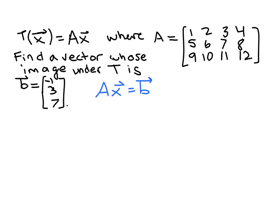So we're asked really to solve this matrix equation of the same type that we've been solving since the beginning of this course. And so we can do that by setting up an augmented matrix, this matrix A, with entries 1, 2, 3, 4, 5, 6, 7, 8, 9, 10, 11, 12, and augment it with the matrix B, negative 1, 3, 7.